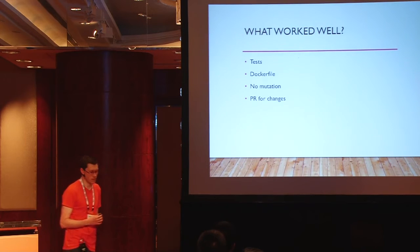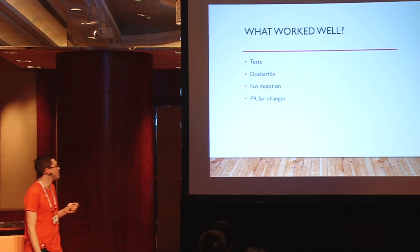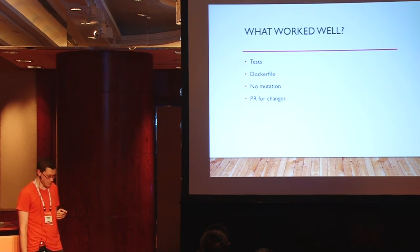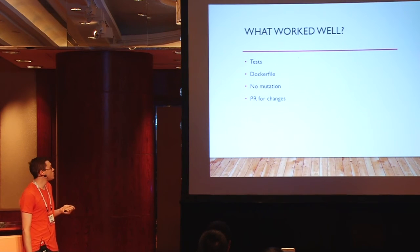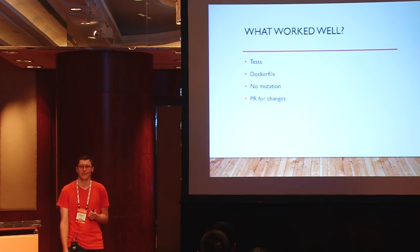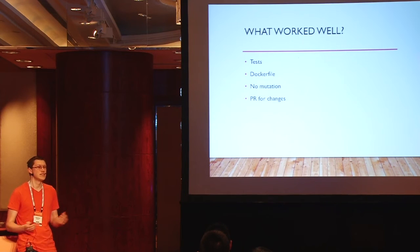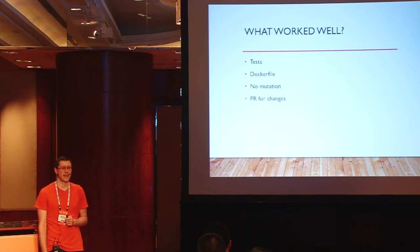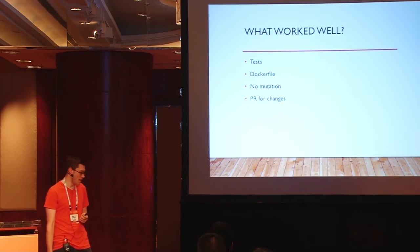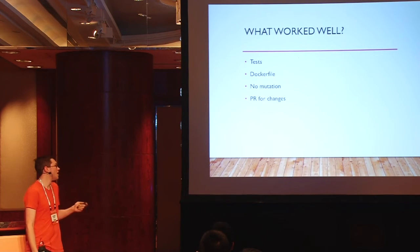What works well: the ability to test, particularly simulating physical cluster components, which reduces what we need to do for deployments and increases throughput. Using Dockerfile as an abstraction for defining the OS image is easy for anyone to understand and participate in. The lack of mutation makes it easy to reason about cluster state — it gives us that deterministic property and confidence that if you want to know what your cluster looks like, just go to source control. And using pull requests for changes makes the approval process much better, keeping it as close to the source code as possible.